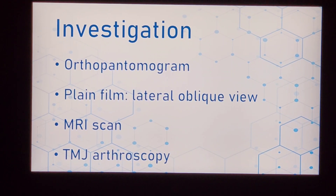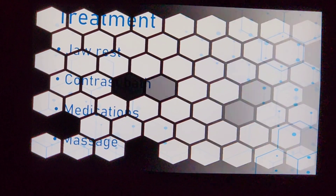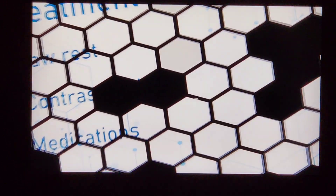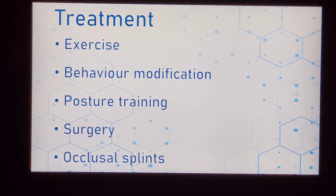90 to 95% of patients can be treated in a simple way. Less than 5% need to be referred to a TMJ specialist, who would request an MRI scan or TMJ arthroscopy if needed. Coming to the treatment, the main topics are: jaw rest, contrast bath, medications, massage, exercises, behavioral modifications, posture training, and — in less than 5% of cases — surgery, starting with occlusal splints.